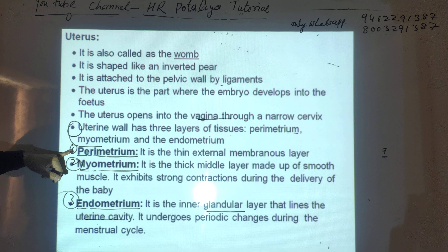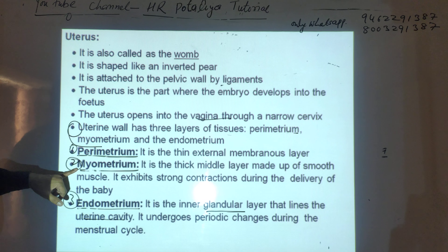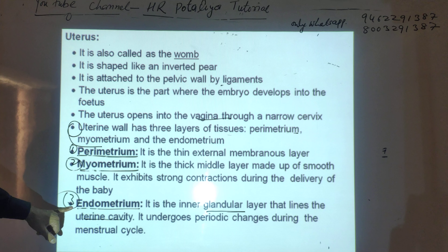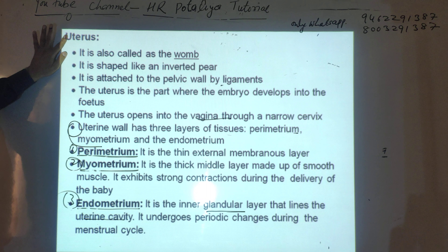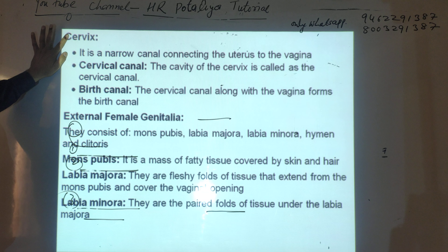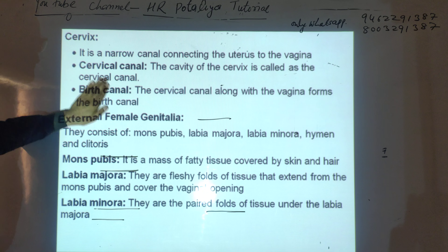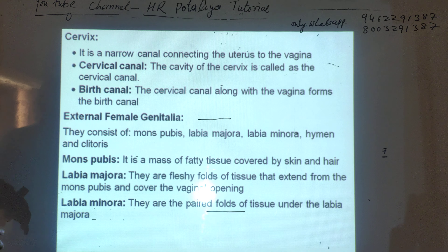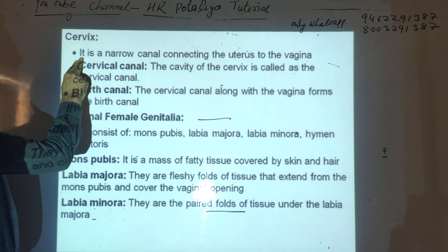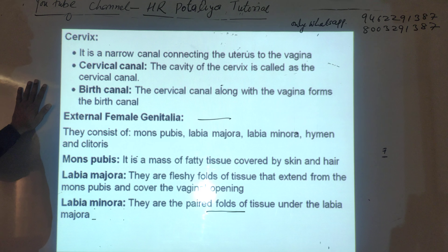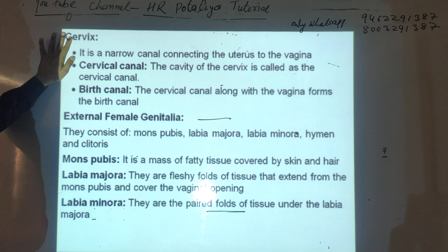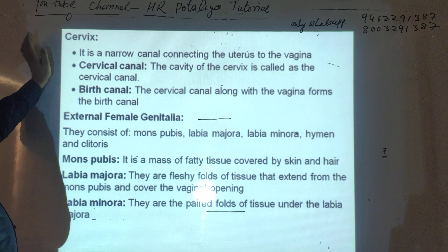To summarize: the uterus consists of three layers — perimetrium (protecting external layer), myometrium (for contractions during parturition), and endometrium (for menstrual cycle and holding pregnancy). After the uterus, the next part is the cervix. The cervix is a narrow canal connecting the uterus to the vagina — it is the neck of the uterus.